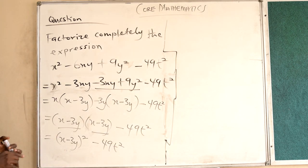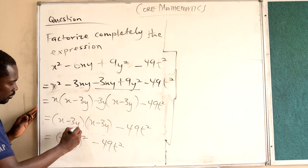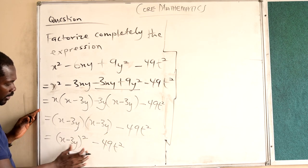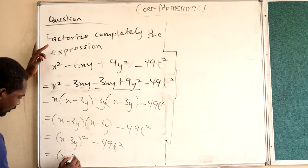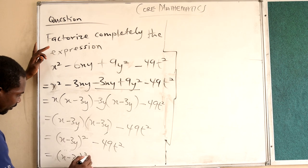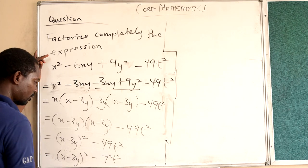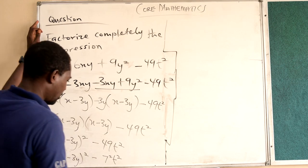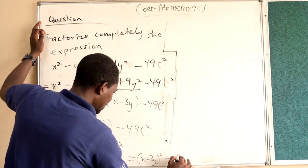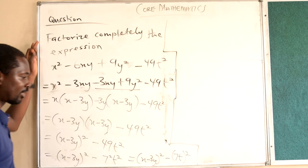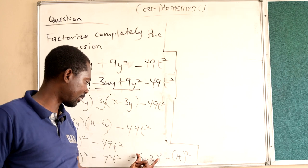Now what you see here, we are seeing difference of two squares. Difference of two numbers that are squared. We have the first number to be x minus 3y squared, and here we have 7 squared t squared, which is the same as x minus 3y squared minus 7t squared. The difference of two squares is clearly showing here.